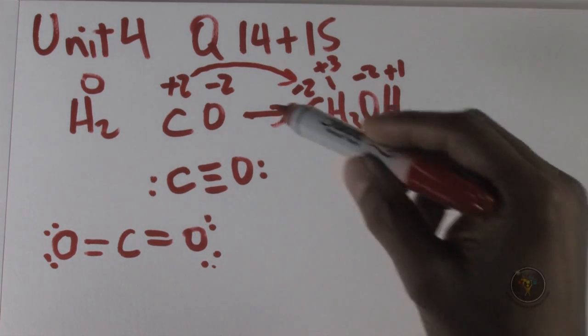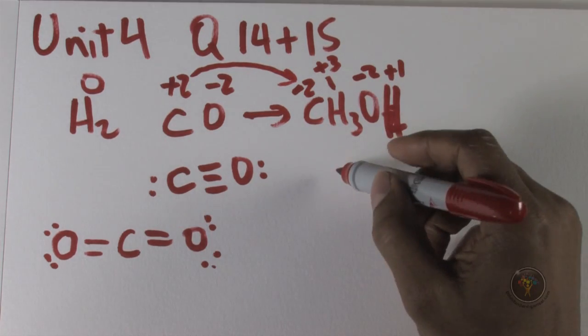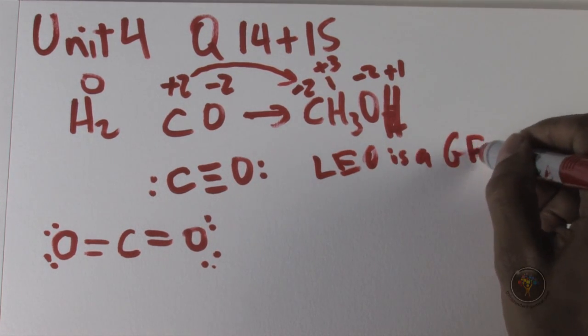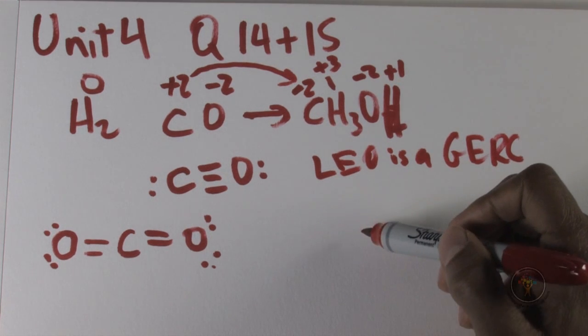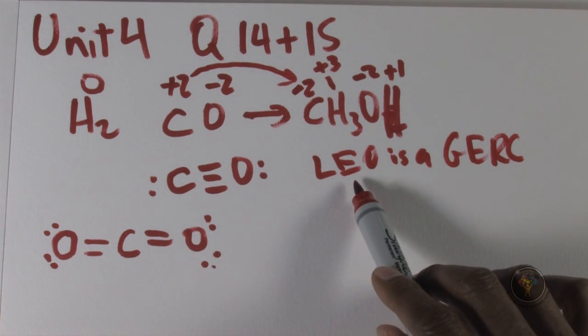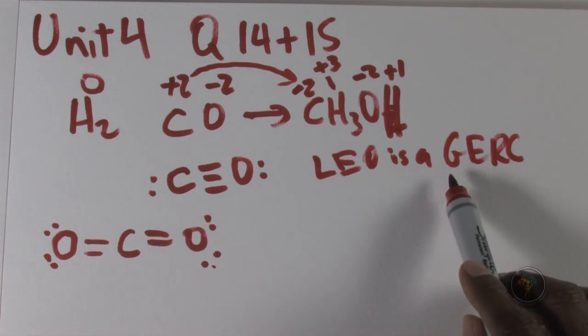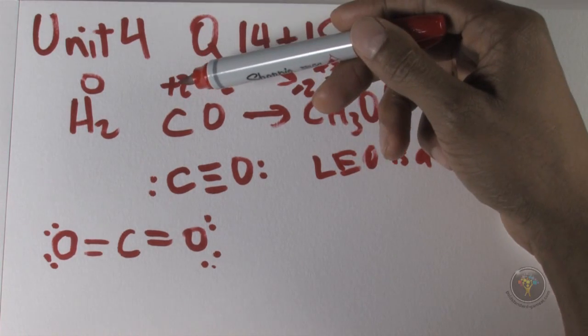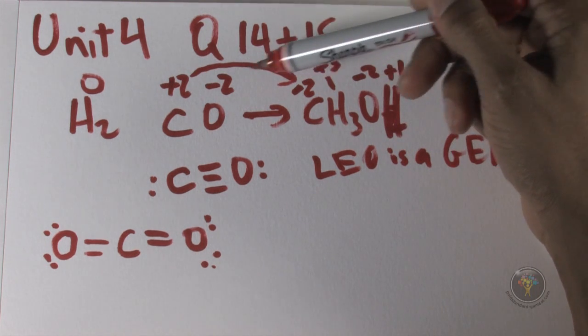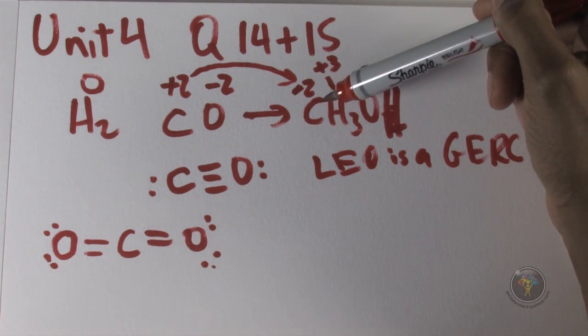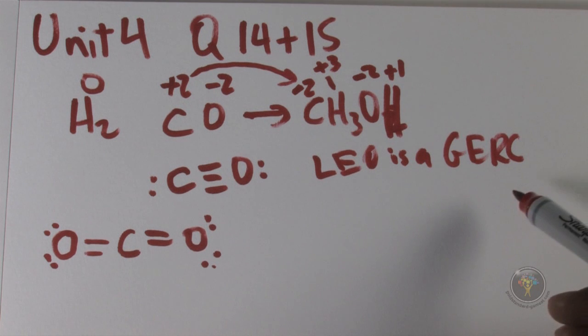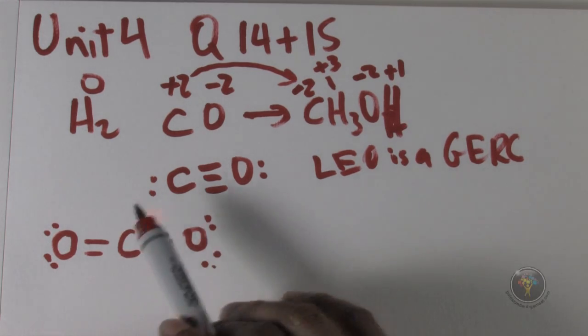Because you might remember LEO is a JERK. LEO is a JERK, and that is a mnemonic that stands for Loss Electrons Oxidation is the Anode, Gain Electrons Reduction at the Cathode. So here we have a gain of electrons because we were plus two, adding electrons which are negative, bringing us to minus two. So that's a gain of electrons, that's reduction. And if this was an electrochemical cell, which is it absolutely is not, then that would be occurring at the cathode, but just a helpful little mnemonic.